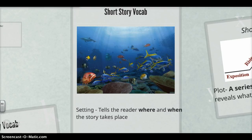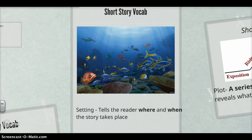Next we have the setting, which is going to tell the reader where and when the story takes place. With the example of Finding Nemo, the setting is going to be under the sea — that's the where — and the when in Finding Nemo would be present day. In other stories the time period might be different; if you think about Little House on the Prairie, that's going to be taking place in the 1800s. Knowing the time period is vital to understanding the text, so remember those two pieces: it's not just where it is, but also when it is.